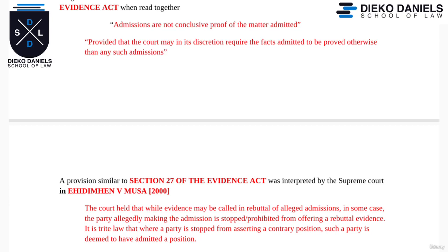A provision similar to Section 27 of the Evidence Act was interpreted by the Supreme Court in the case of Aedemon vs Musa. The court held that while evidence may be called in rebuttal of an alleged admission, in some cases the party allegedly making the admission is stopped or prohibited from offering rebuttal evidence. It is trite law that where a party is stopped from asserting a contrary position, such a party is deemed to have admitted that position.